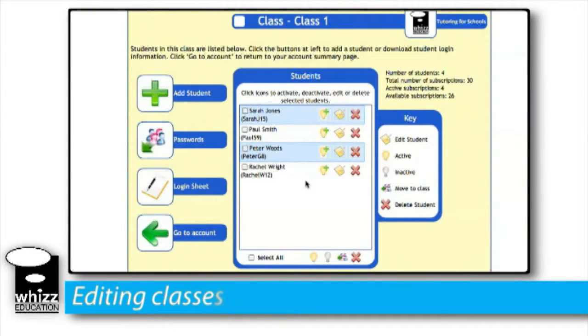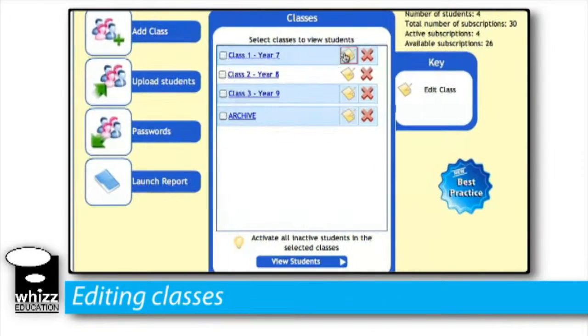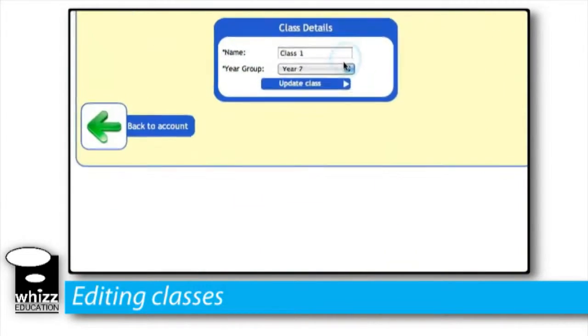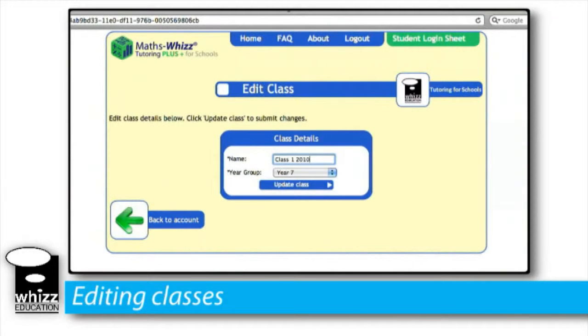Editing classes is much like editing students. From the account summary page by simply clicking on the icon next to the class I can edit the class name and the year group. When I have finished editing the class I click update class here to save my changes.